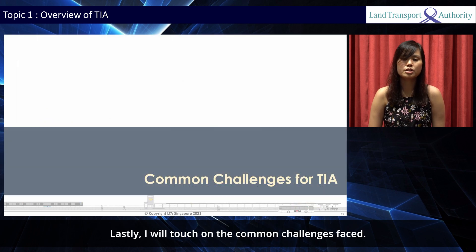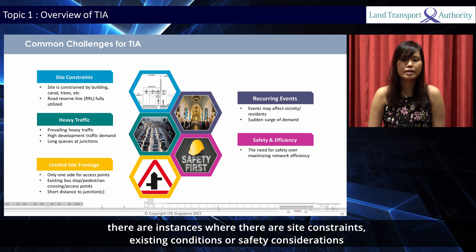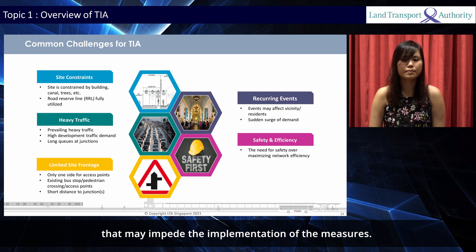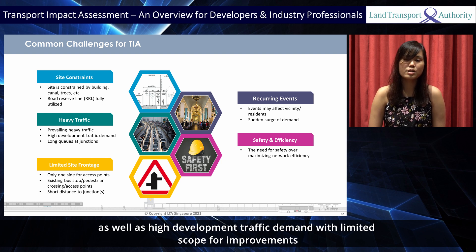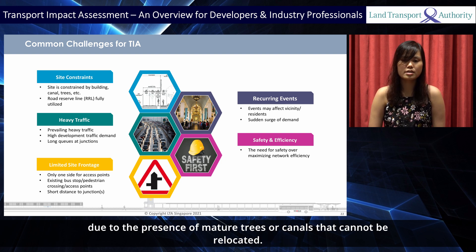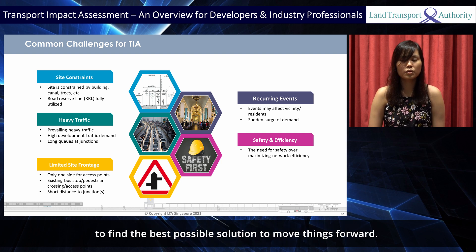Lastly, I will touch on the common challenges faced. While a TIA can identify the different problems and needs as well as propose measures to mitigate them, there are instances where site constraints, existing conditions or safety considerations may impede the implementation of the measures. Some challenges include limited site frontage for location of transport nodes and accesses, as well as high development traffic demand with limited scope for improvements due to the presence of mature trees or canals that cannot be relocated. When such issues arise, LTA will work together with the consultants and the developers to find the best possible solution to move things forward.